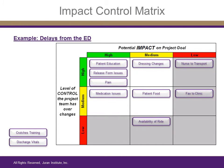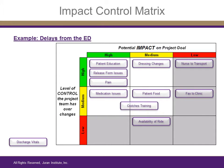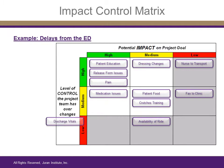Pain: high impact, high control. Crutches training: medium impact, medium control. Discharge vitals: medium impact, high control.